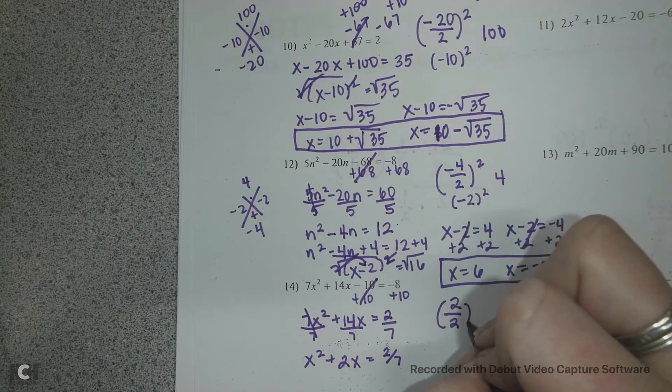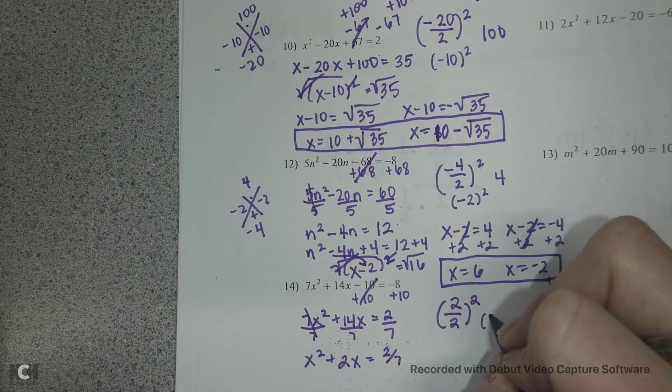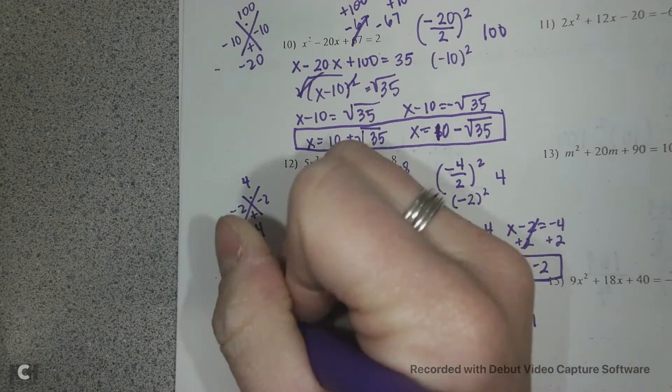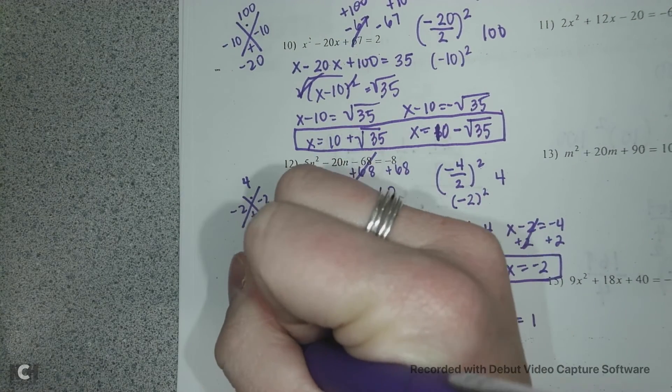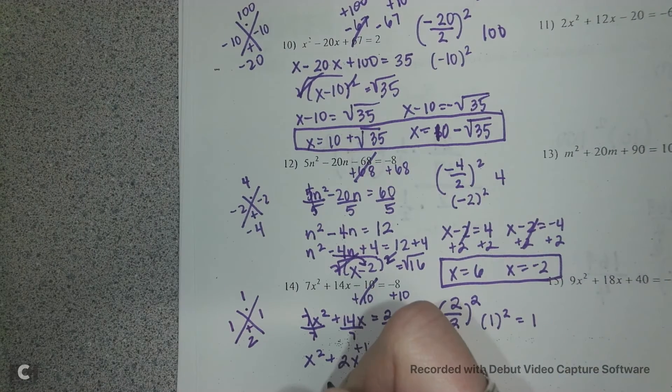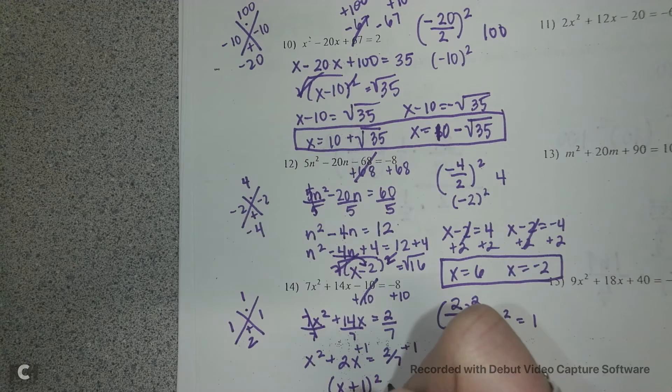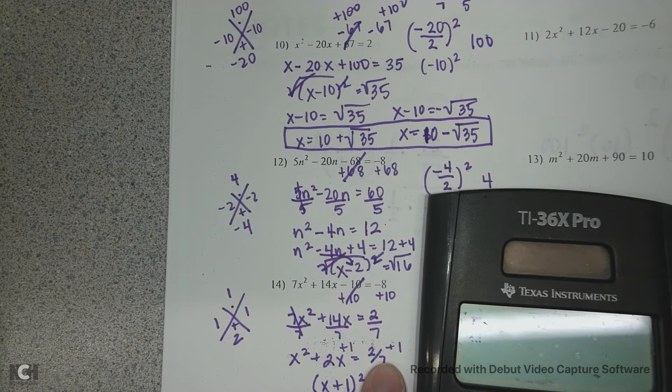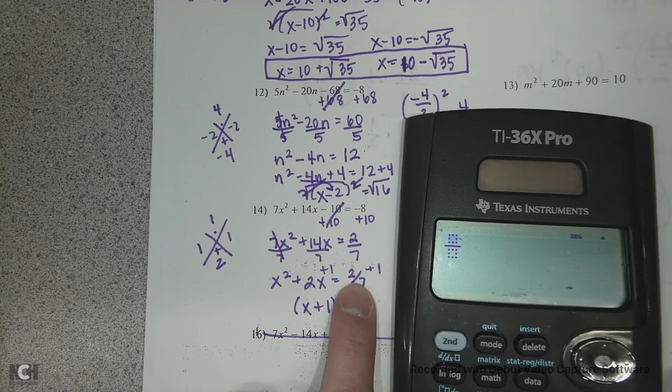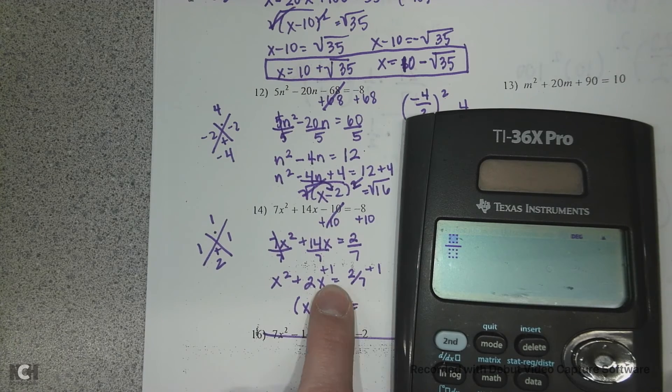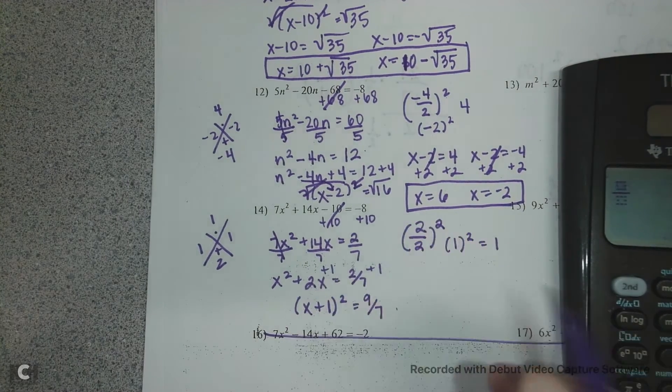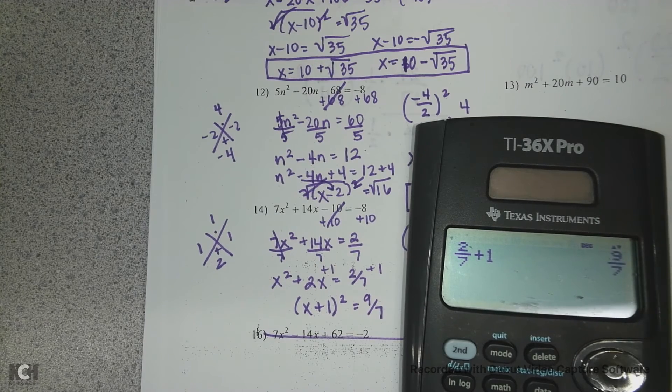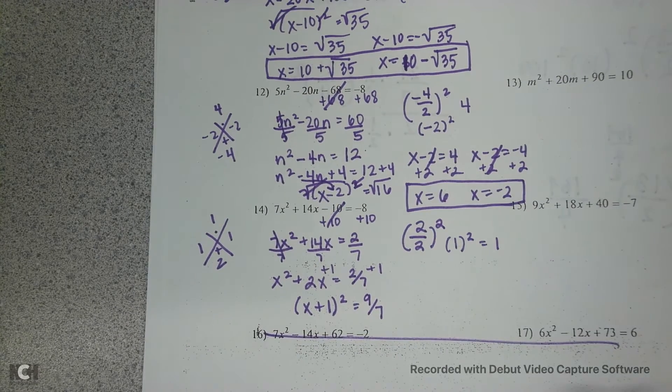And we're gonna do 2 divided by 2. My b value is squared. 2 divided by 2 is 1 and 1 squared is 1. So I'm gonna add 1 over here and 1 over here. Now we want to multiply to get 1, but add to get positive 2. So 1 and 1. I have x plus 1 squared equals, and then just use your calculator. Don't, you don't have to reason this out. If you want to, you can. 7, 2 sevenths plus 1 would be 7 over 7 for 1. And 7 plus 2, so this should be 9 sevenths. And then we'll just check. So we've got 2 sevenths plus 1 is 9 sevenths. All right, let's keep going.